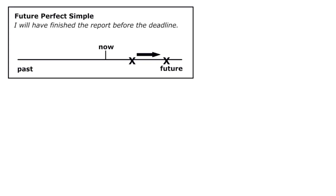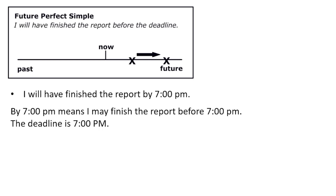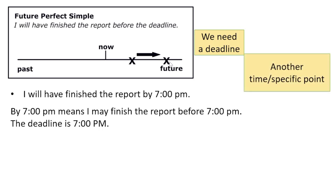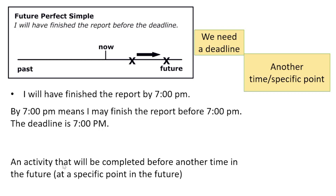Future perfect example: 'I will have finished the report by 7 pm.' 'By 7 pm' means I may finish before 7 pm — perhaps at 6 pm. The point is I must finish it by the deadline of 7 pm. In future perfect, we need a deadline — we can call it 'another time' or a 'specific point in the future.' The activity is completed before that deadline.